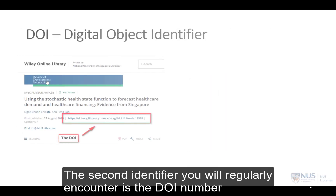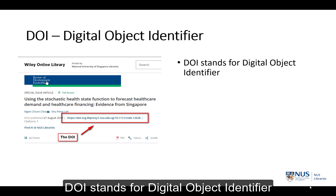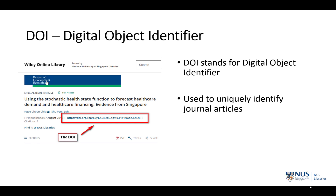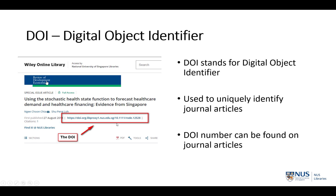The second identifier you regularly encounter is the DOI number. DOI stands for Digital Object Identifier and it is used to uniquely identify online journal articles. The DOI number can be found on the journal article and this is how it usually looks like.